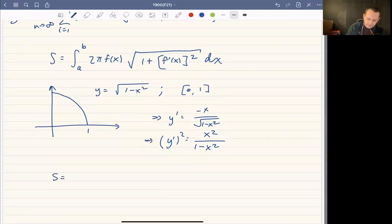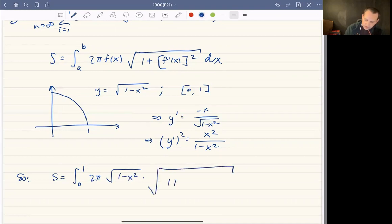So our surface area formula is going to become the integral from zero to one, 2π. Our function was square root of one minus x squared. And then if we look at the square root of one plus y prime squared, that's one plus x squared over one minus x squared.